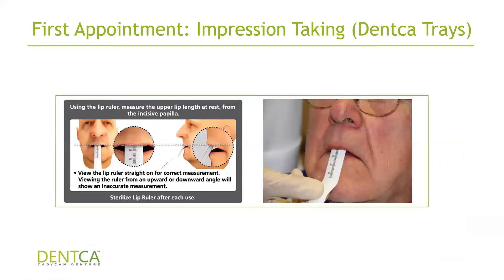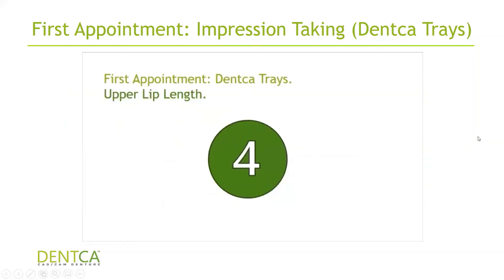The last part: if you're doing an upper denture, you need to take the Denka lip ruler, which is included in the starter kit. Put it on the incisive papilla and ask the patient to relax their lips — sometimes they try to help and stretch the lip down. Write down that measurement, as it will be asked of you when loading it into the Denka Design software. It's always good to get a second pair of eyes, because depending on where you're viewing from it might look like a different number — always get a second opinion, just like you do with shades.